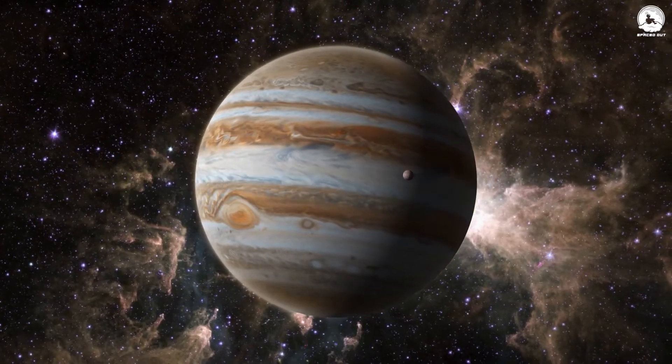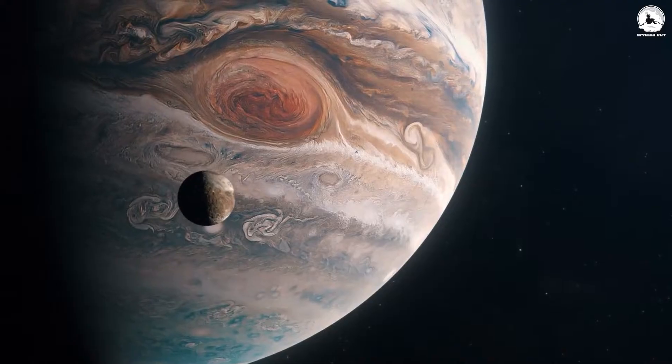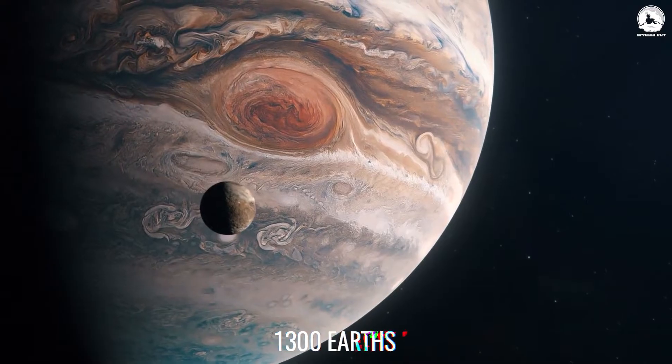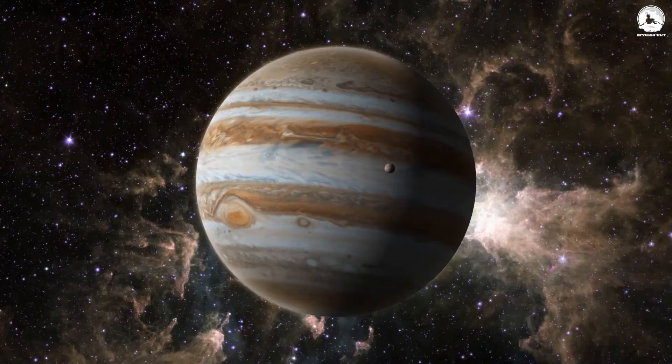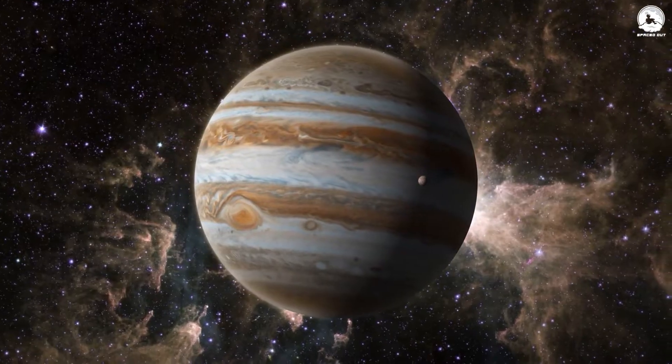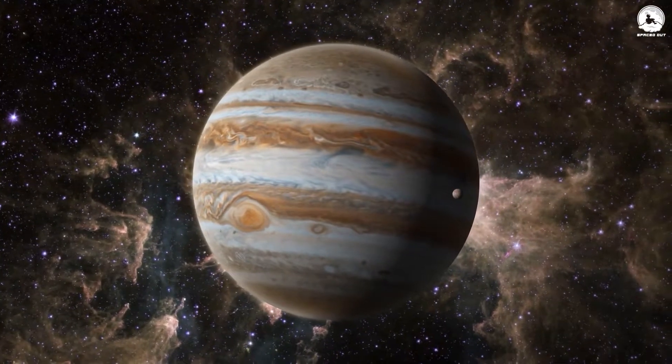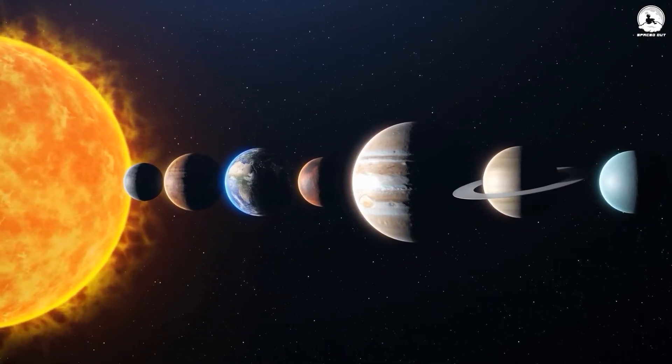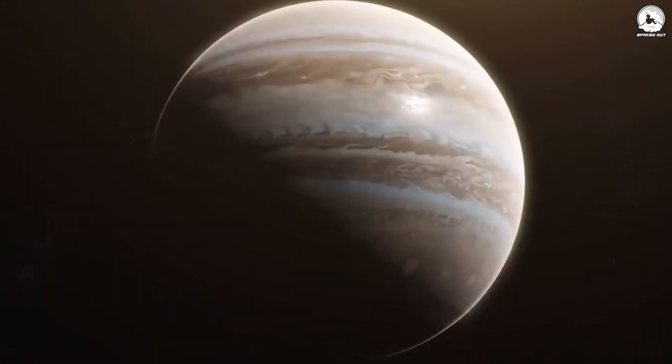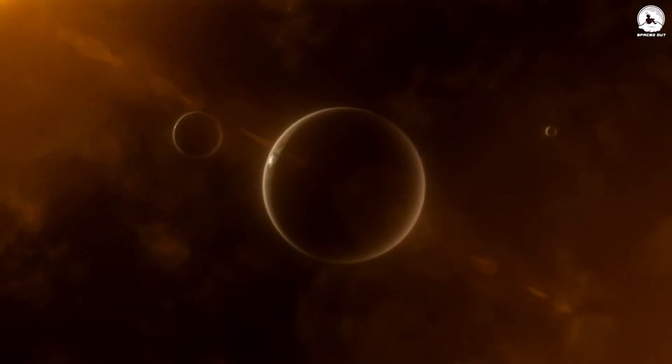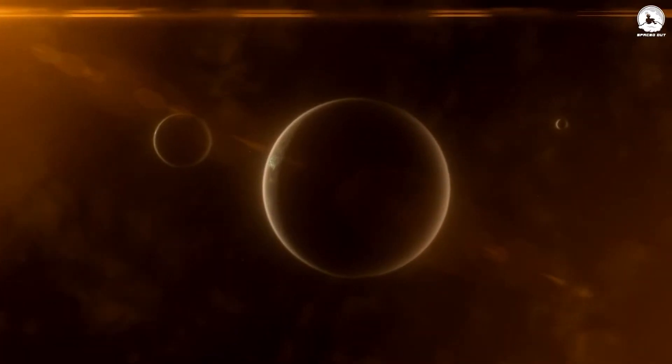Jupiter, the largest planet in our solar system, dwarfs Earth to the extent that over 1,300 Earths could fit within its vast gaseous expanse. Not only that, but Jupiter is also two and a half times more massive than all the other planets in our solar system combined. But despite its enormous size, Jupiter does not come close to the largest planet discovered so far.